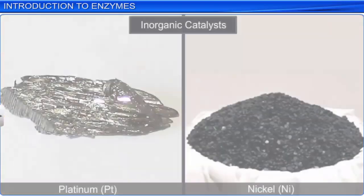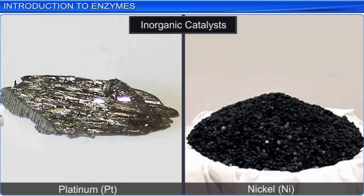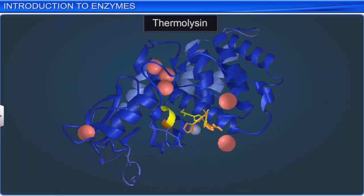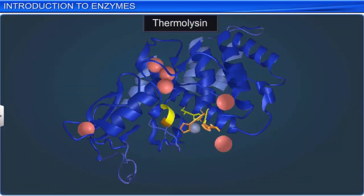Inorganic catalysts, such as platinum and nickel, work effectively at high temperatures and under high pressure. While enzymes are damaged at temperatures above 40 degrees centigrade. However, some enzymes, such as thermolysin, can be isolated from thermophilic organisms that live in high temperature environments like sulfur springs. These enzymes retain their catalytic power even at temperatures as high as 80 to 90 degrees centigrade.